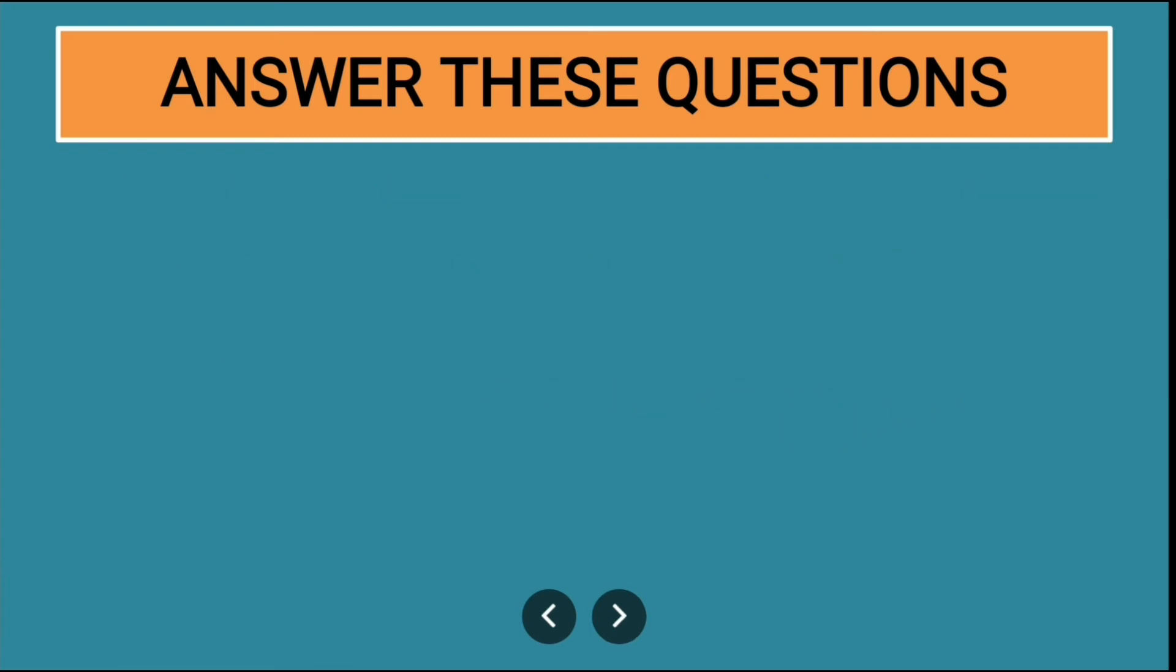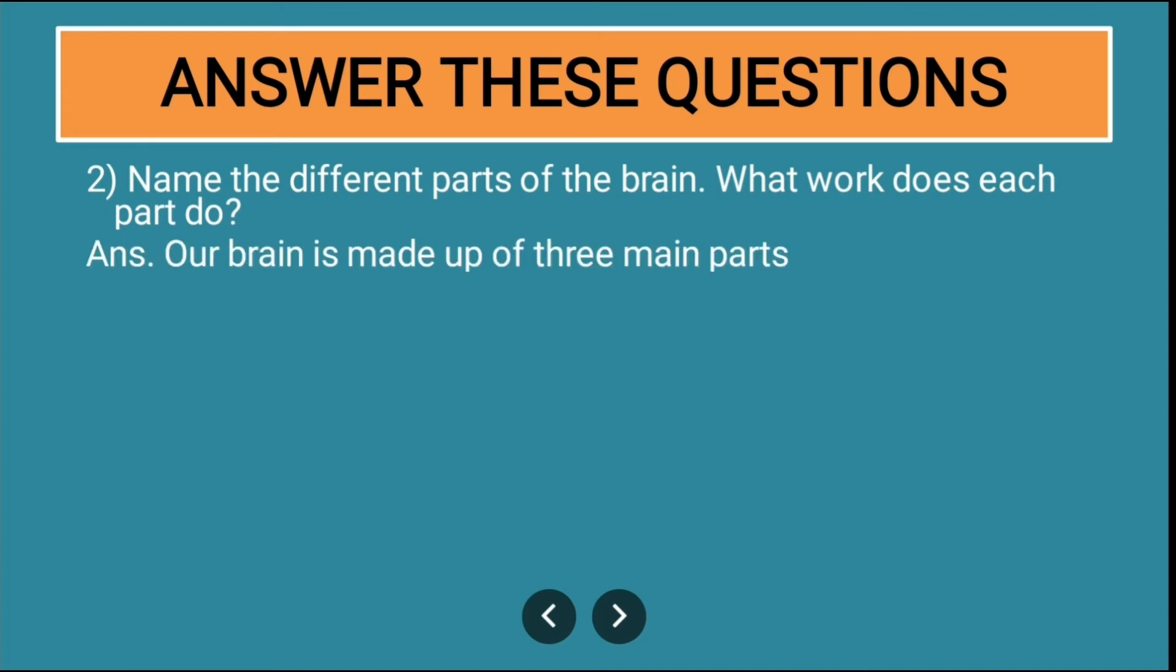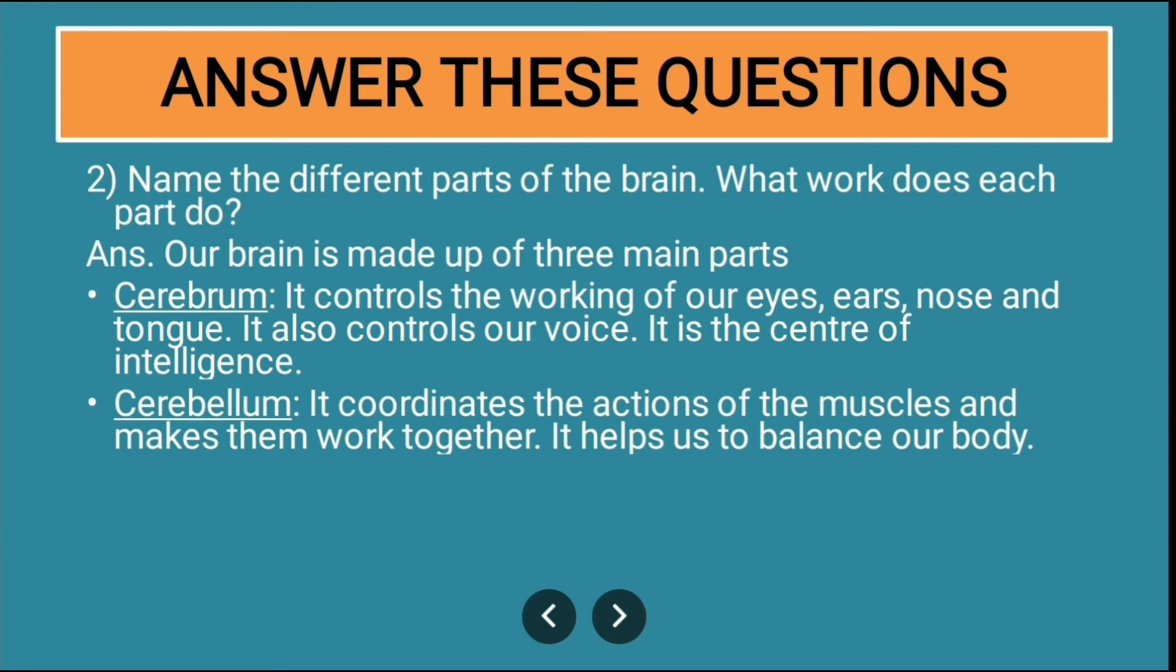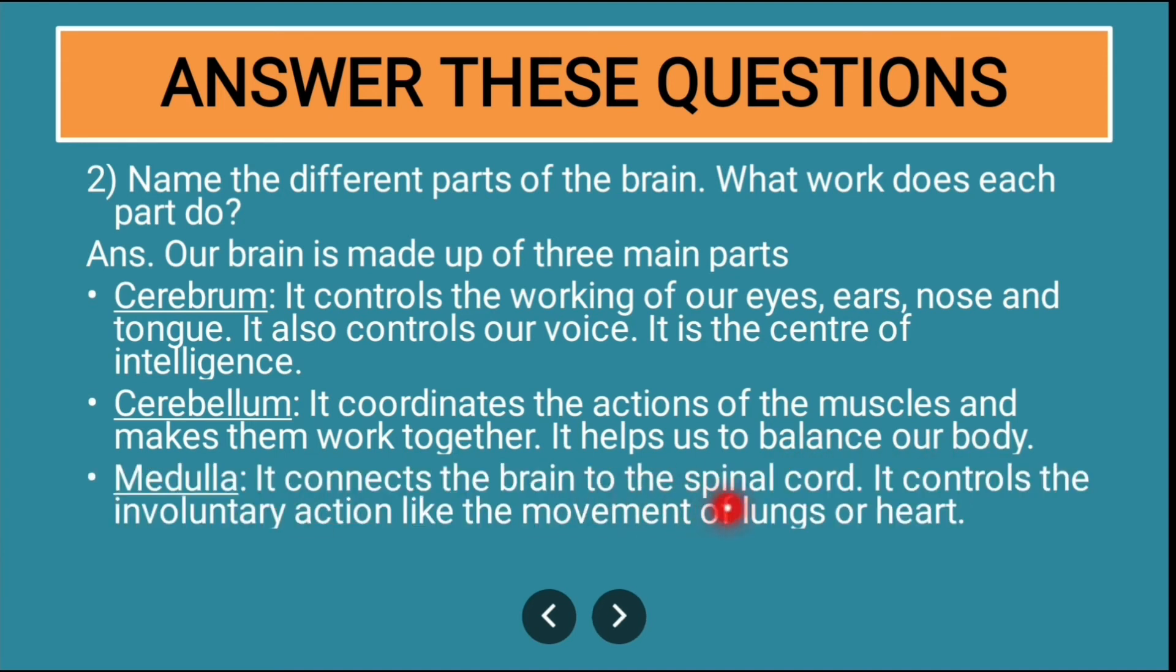Name the different parts of the brain. What work does each part do? Our brain is made up of three main parts. Cerebrum: it controls the working of our eyes, ears, nose, tongue. It also controls our voice. It is the center of intelligence. Cerebellum: it coordinates the action of the muscles and makes them work together. It helps us to balance our body also. Medulla: it connects the brain to the spinal cord. It controls the involuntary actions like the movement of lungs or heart.